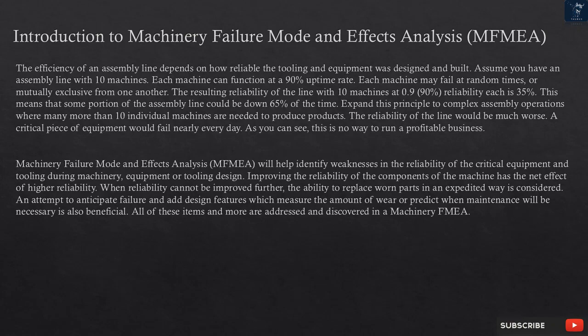This means that some portion of the assembly line could be down 65% of the time. Expand this principle to complex assembly operations where many more than 10 individual machines are needed to produce products — the reliability of the line would be much worse. A critical piece of equipment would fail nearly every day. As you can see, this is no way to run a profitable business.